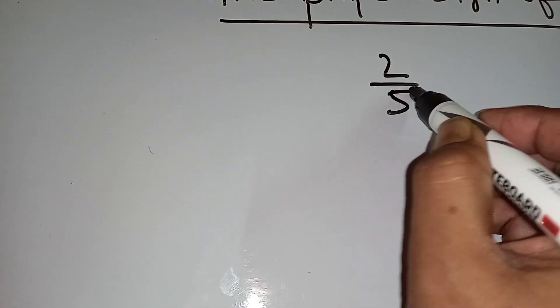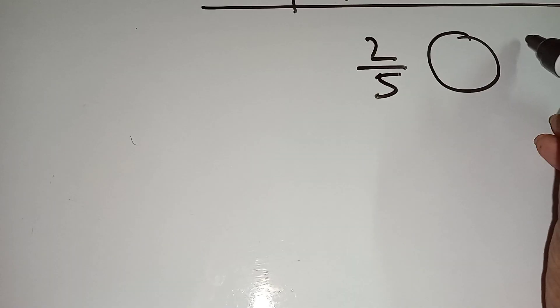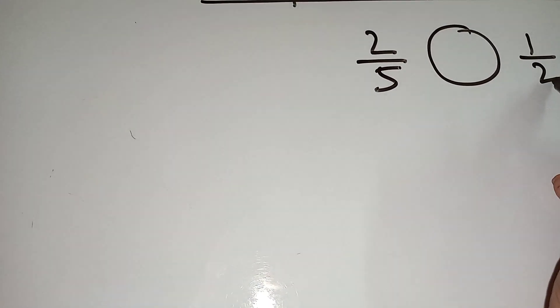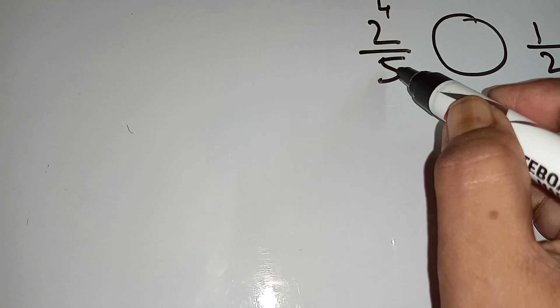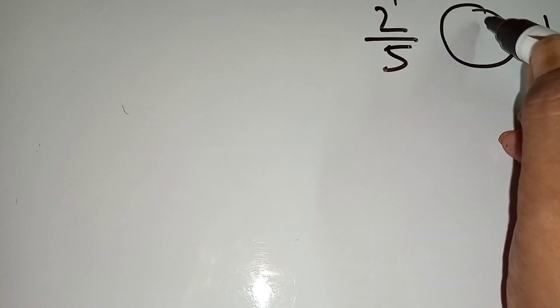2 by 5, 1 by 2. At first you multiply this into this, that means 4. And this into this, 5. That means this is greater than this, then you will give this sign.